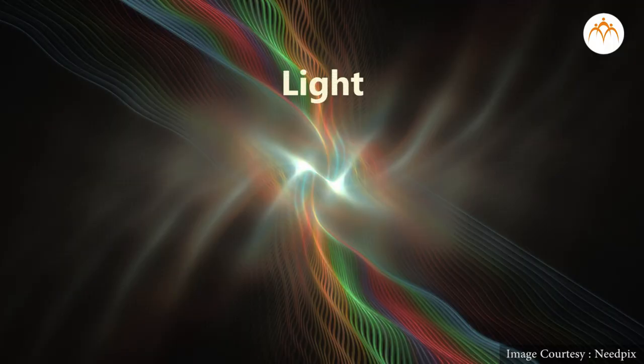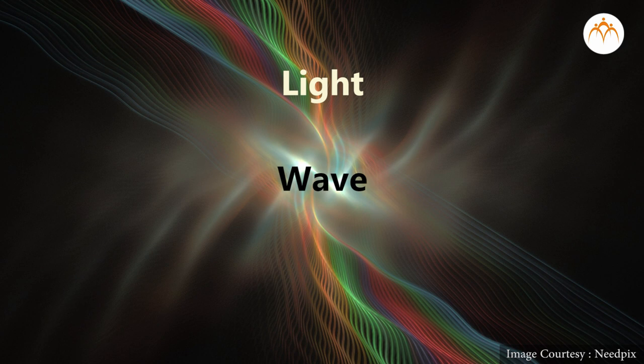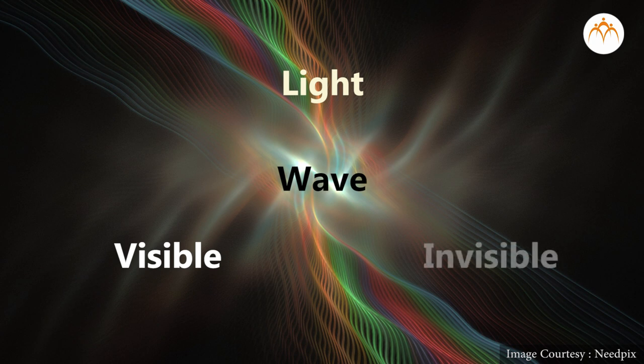Light is another form of wave. Light waves can be classified into two categories. Visible light waves and invisible light waves.